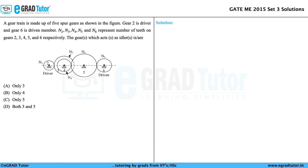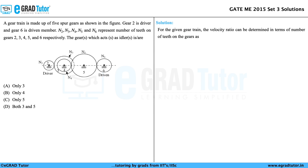A gear train is made up of five spur gears as shown in the figure. Gear 2 is the driver and gear 6 is the driven member. n2, n3, n4, n5, and n6 represent the number of teeth on gears 2, 3, 4, 5, and 6 respectively. The gear which acts as idler is being asked. This question is from gears and gear trains in the subject Theory of Machines.